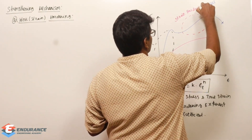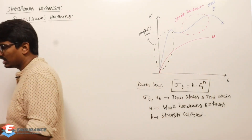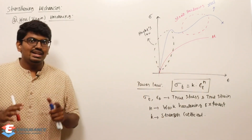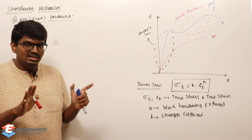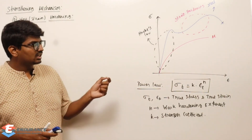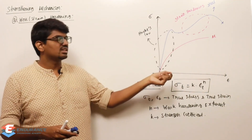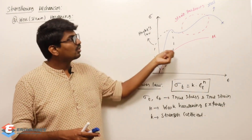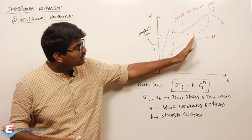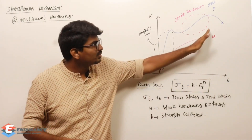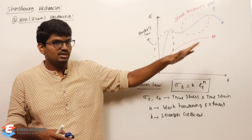Because of the increase in strength, I need to apply more load to cause more deformation. This phenomenon is called strain hardening or work hardening. In the strain hardening region, I need to apply more stress for deformation to happen.